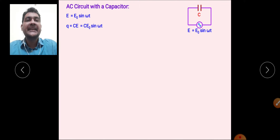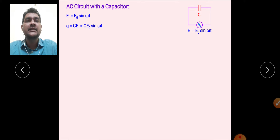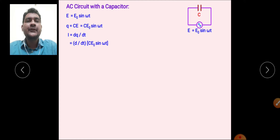The applied voltage is e = e₀ sin(ωt). The charge stored on the capacitor is q = CV, and since the potential difference is e₀ sin(ωt), we write q = Ce₀ sin(ωt). The current is the rate of change of charge, so we differentiate this charge with respect to time to obtain the instantaneous current in the circuit.